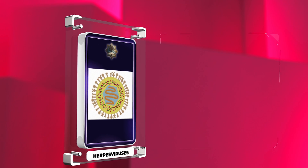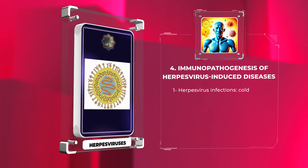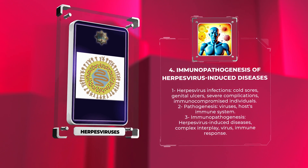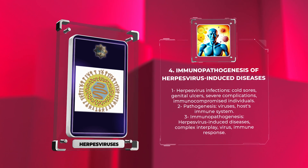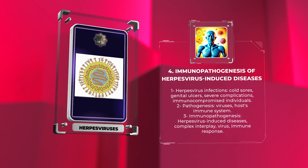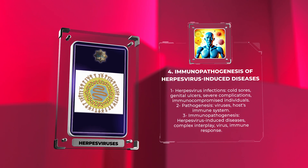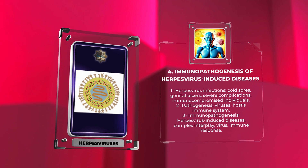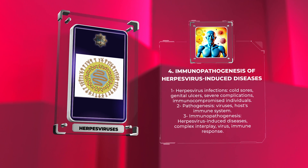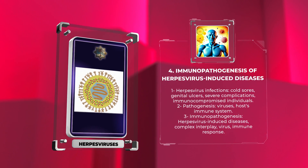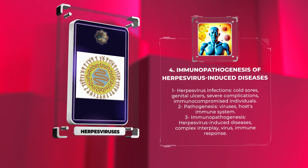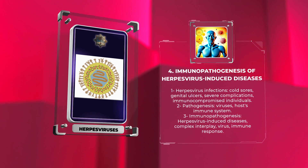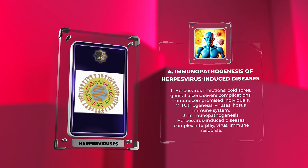Herpes virus infections can lead to a wide spectrum of diseases, ranging from cold sores and genital ulcers to severe complications in immunocompromised individuals. The pathogenesis of these diseases involves intricate interactions between the viruses and the host's immune system. In this section, we will dissect the immunopathogenesis of herpes virus-induced diseases, shedding light on the complex interplay between the virus and various components of the immune response.